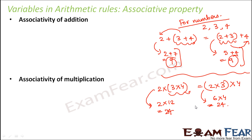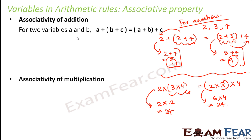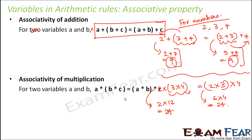These rules hold true for variables as well. If you have three variables a, b and c, then a plus (b plus c) is equal to (a plus b) plus c. This holds true for variables. In a similar way for multiplication, a into (b into c) is equal to (a into b) into c. So the same concept and the same properties — commutative property and associative property — exist for variables as they exist for numbers.